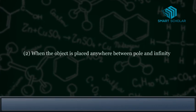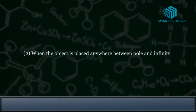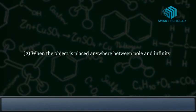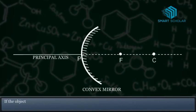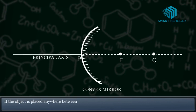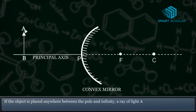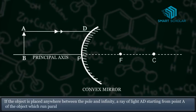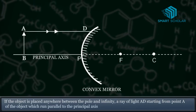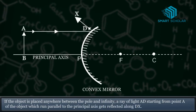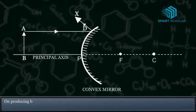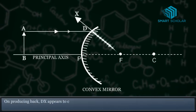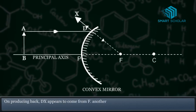When the object is placed anywhere between the pole and infinity, a ray of light starting from point A of the object which runs parallel to the principal axis gets reflected. On producing back, it appears to come from F.